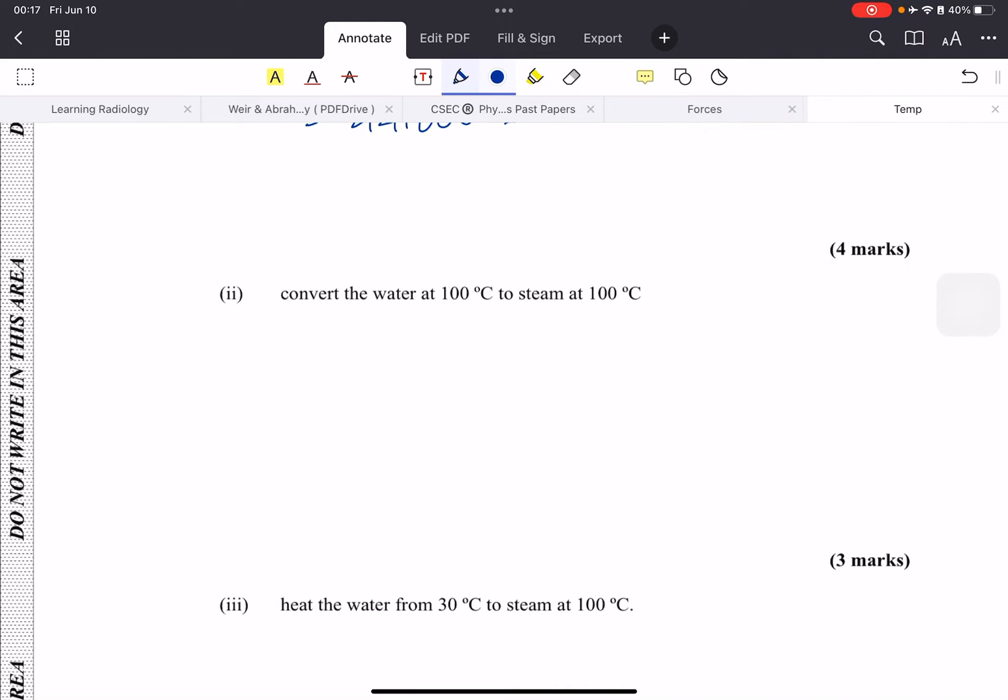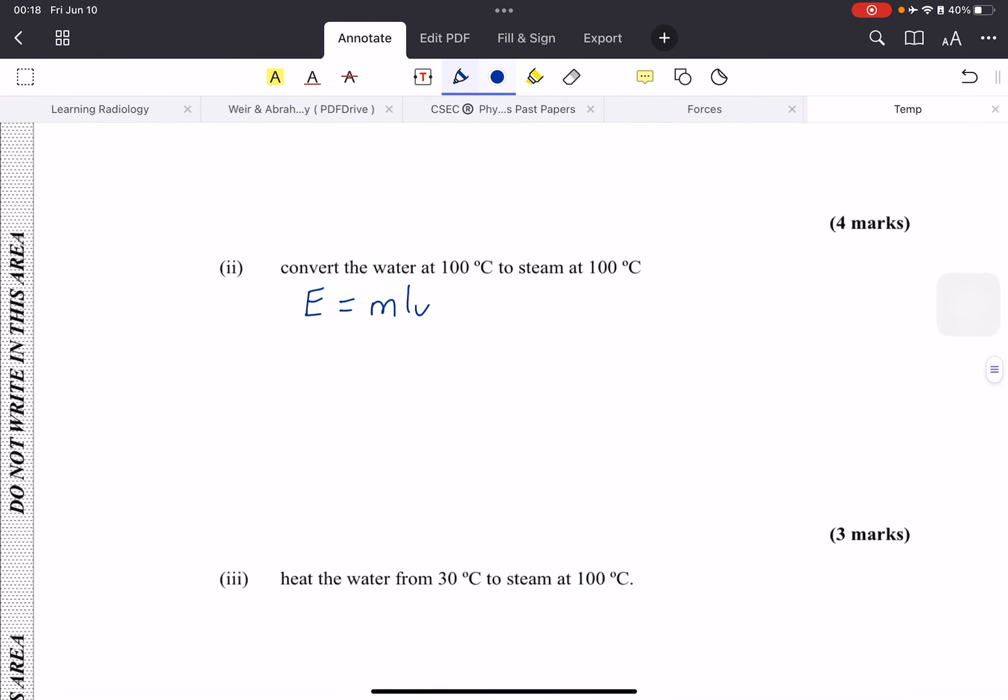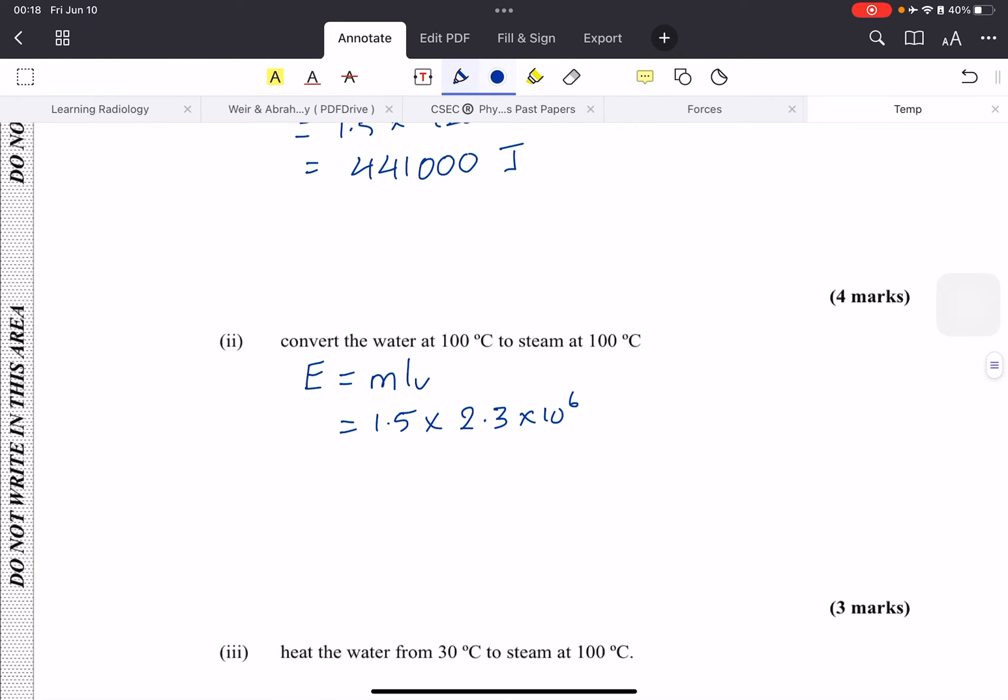The energy to convert the water at 100 degrees Celsius to steam—this is different now. This is using the latent heat because you are changing states. Our formula here is E equals m L_v, and they will give you your L_v. Again, m is 1.5; that wouldn't change. And the latent heat was 2.3 by 10 to the 6; that's what they give us here. Put this in your calculator.